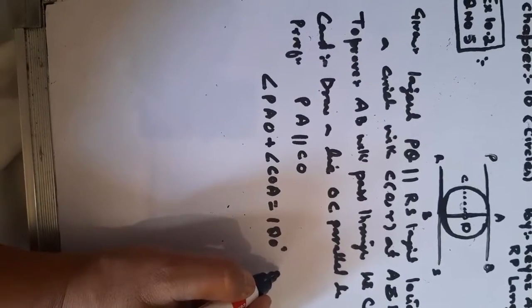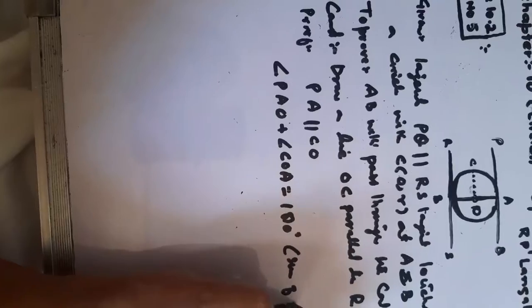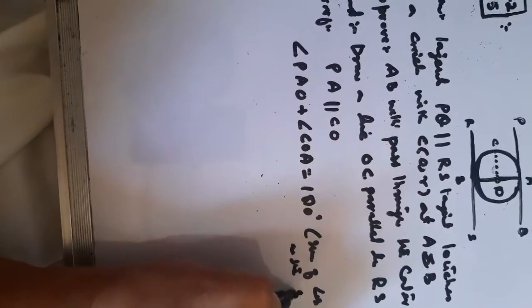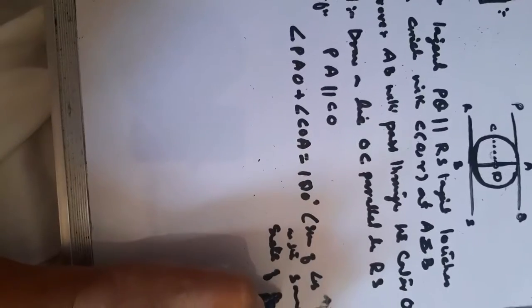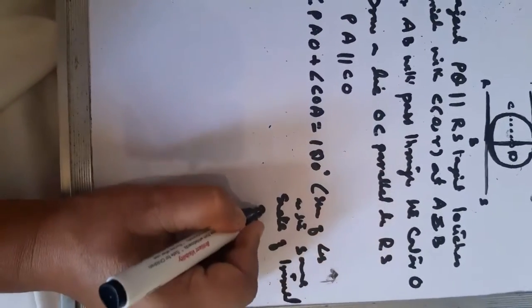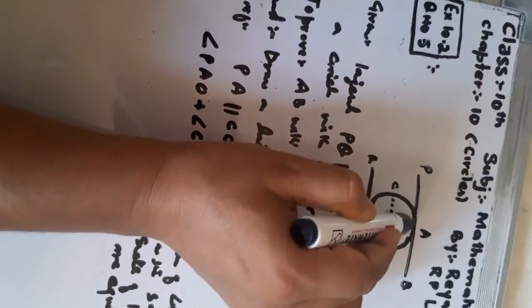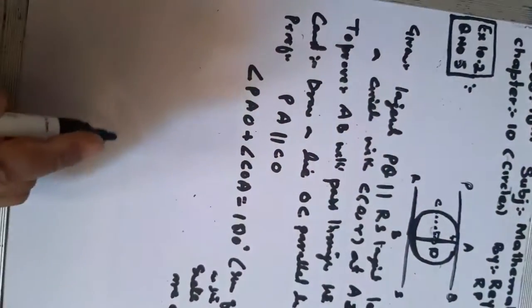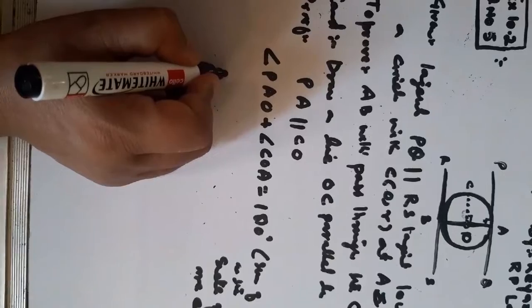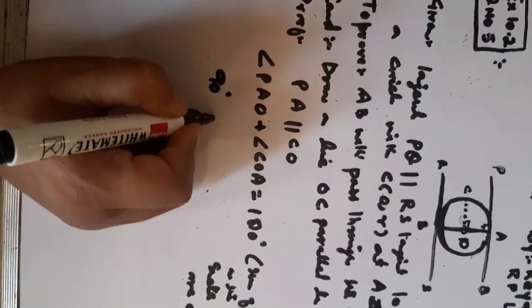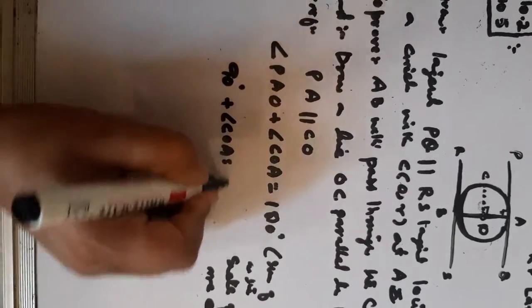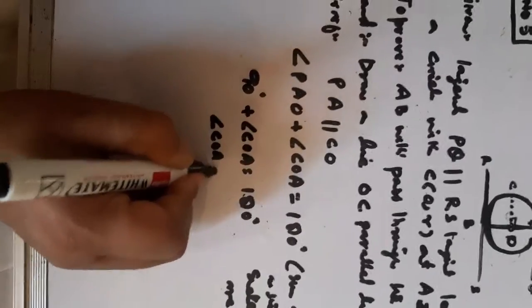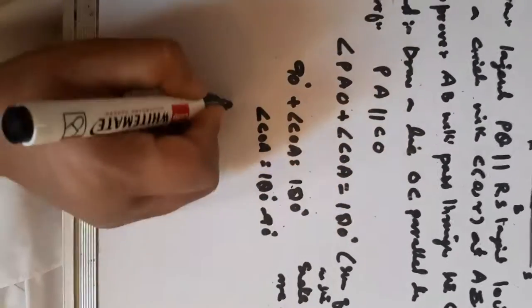The sum of angles on the same side of a transversal is always equal to 180 degrees. Since OA is a radius and PA is a tangent, by the theorem that a tangent is perpendicular to the radius at the point of contact, angle PAO is 90 degrees. Therefore, angle PAO plus angle COA equals 180 degrees, giving angle COA equal to 180 minus 90, which is 90 degrees.